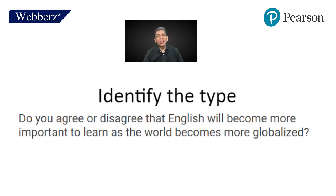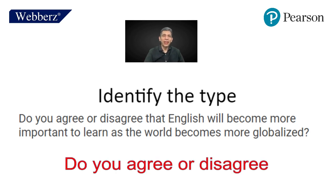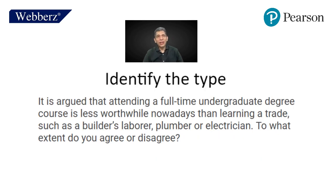'Do you agree or disagree that English will become more important to learn as the world becomes more globalized?' — This is a 'do you agree or disagree' type. The second example: 'It is argued that attending a full-time undergraduate degree course is less worthwhile nowadays than learning a trade such as a builder's laborer, plumber, or electrician. To what extent do you agree or disagree?' — This is an 'it is argued' type.